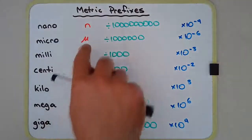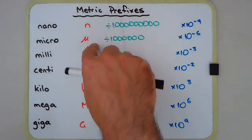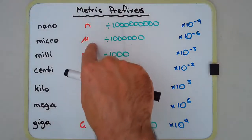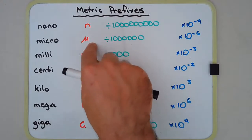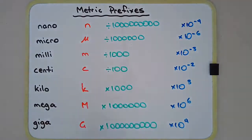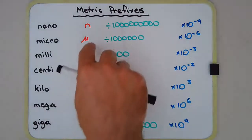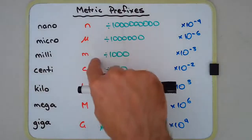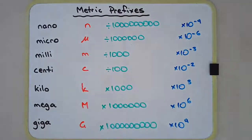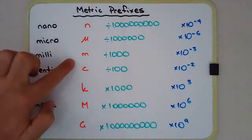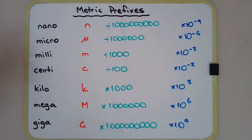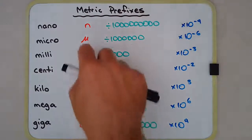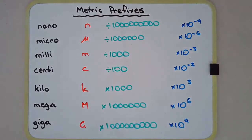Micro uses the Greek letter mu — the lowercase Greek m. The reason they use that symbol rather than a regular m is that m is already taken by milli. Since micro and milli both begin with m, using a Greek letter was one way to differentiate between the two.